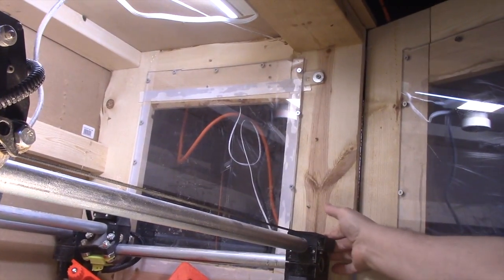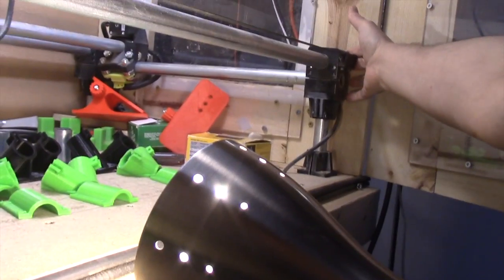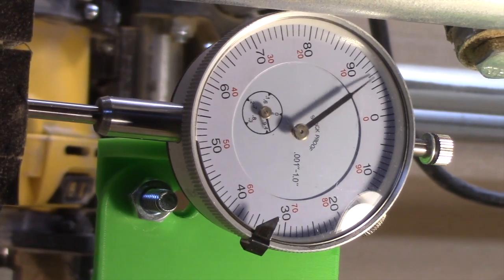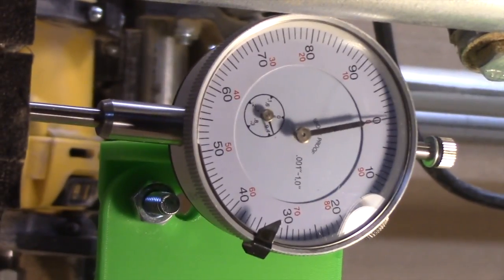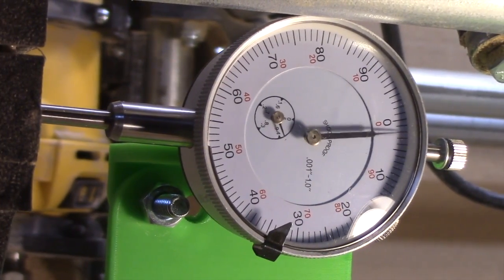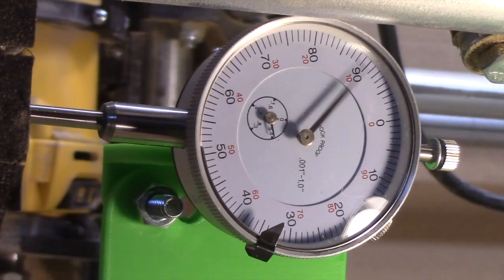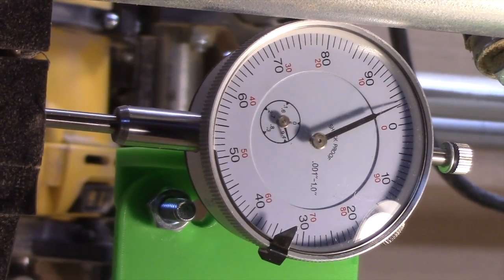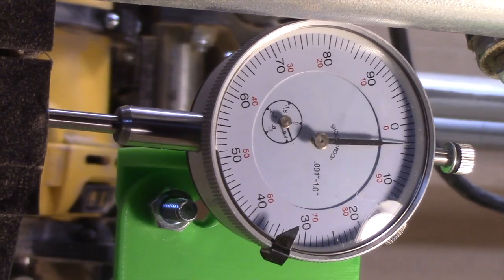There's two different types of things I did here. One is that initially here I just pushed on the side of the mostly printed CNC machine to see how much flex I could get out of that measuring it here, and I could get a little bit as you can see.